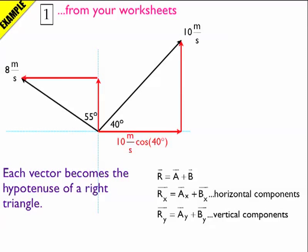Now I use trig. The adjacent side is going to use the cosine function. The 10 meters per second becomes the hypotenuse. The red line I have drawn here is the adjacent side, so it's cosine. So 10 meters per second times cosine 40 degrees is how big the horizontal component is. Vertically, it's 10 meters per second times sine 40 degrees. The horizontal component goes to the right so it's positive, and the vertical component goes upward so it's also positive.